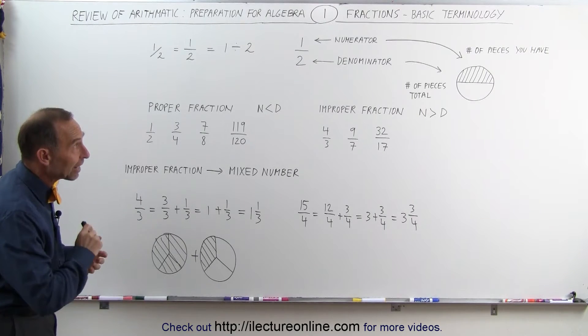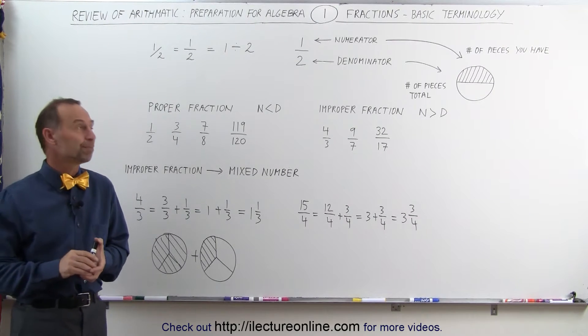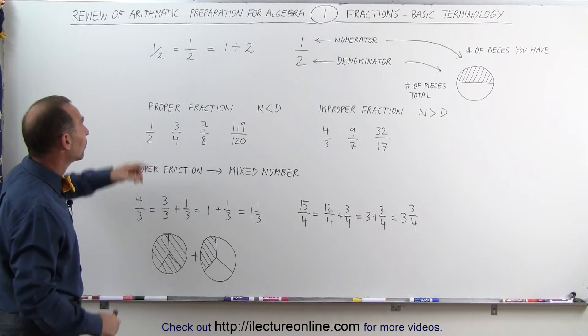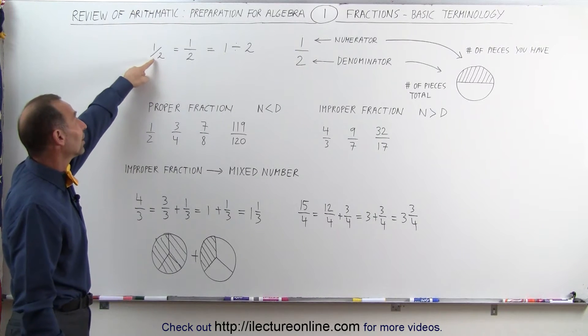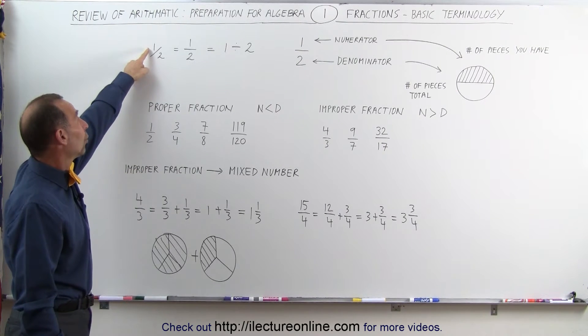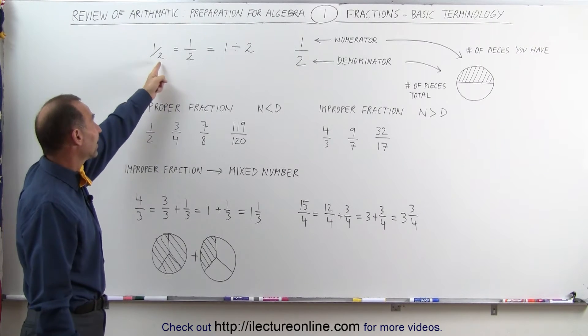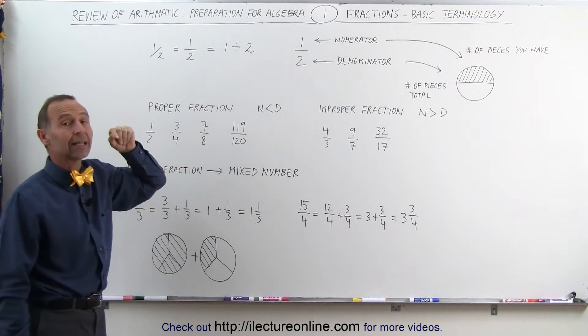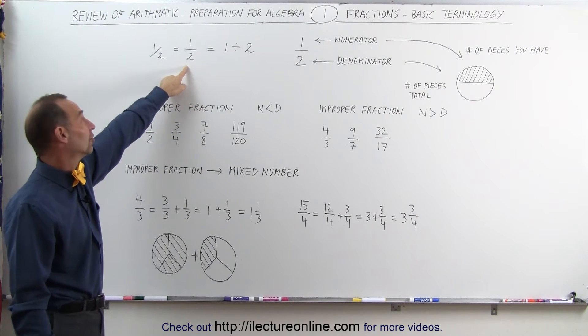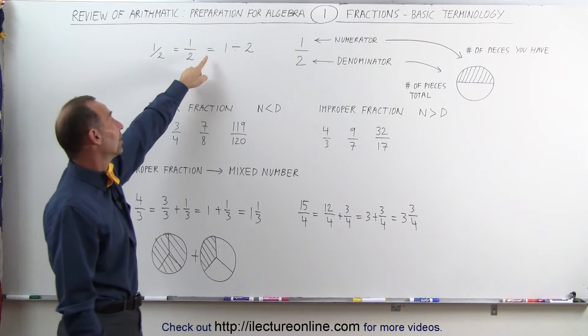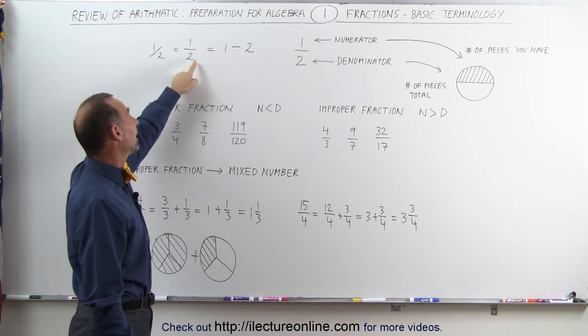Starting out with fractions and basic terminology: What is a fraction? Well, we write a fraction like this with two numbers and a line in between. This is one over two or one half. We can write it slanted like this or vertical like that—same thing. This is always preferred; it's easier to see. Or you can think about it as one divided by two.